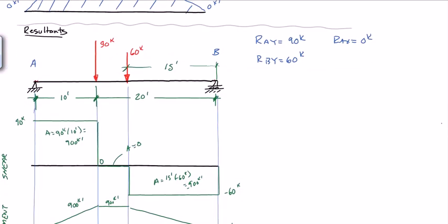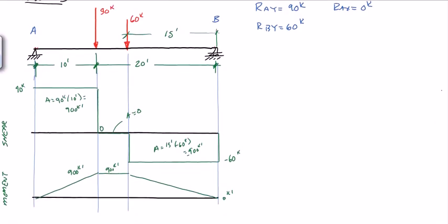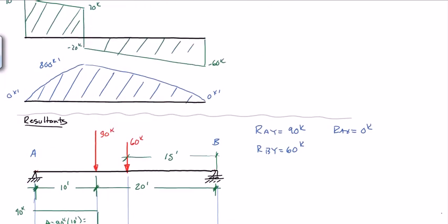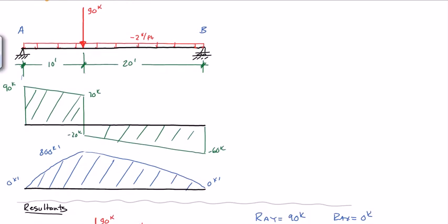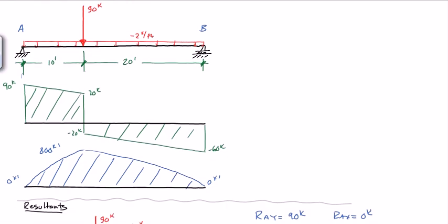So although if this was your actual loading, if you actually had a 60 kip point load in the middle and a 90 kip point load, this shear and moment diagram would be correct. However, if the problem you're solving is a 90 kip load with a 2 kip per foot distributed load, then your proper answer would be shear and moment diagrams that look like this.